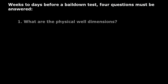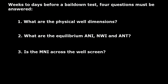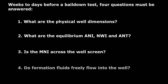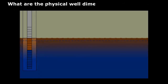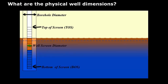Weeks to days before a bail-down test, four questions must be answered. One: what are the physical well dimensions? Two: what are the equilibrium air-NAPL and NAPL-water interface elevations and/or the equilibrium apparent NAPL thickness value? Three: is the mobile NAPL interval across the well screen? And four: do formation fluids freely flow into the well? The physical well dimension values needed include the top-of-screen (TOS) elevation or depth, the bottom-of-screen (BOS) elevation or depth, the borehole diameter, and the well casing and screen diameter.